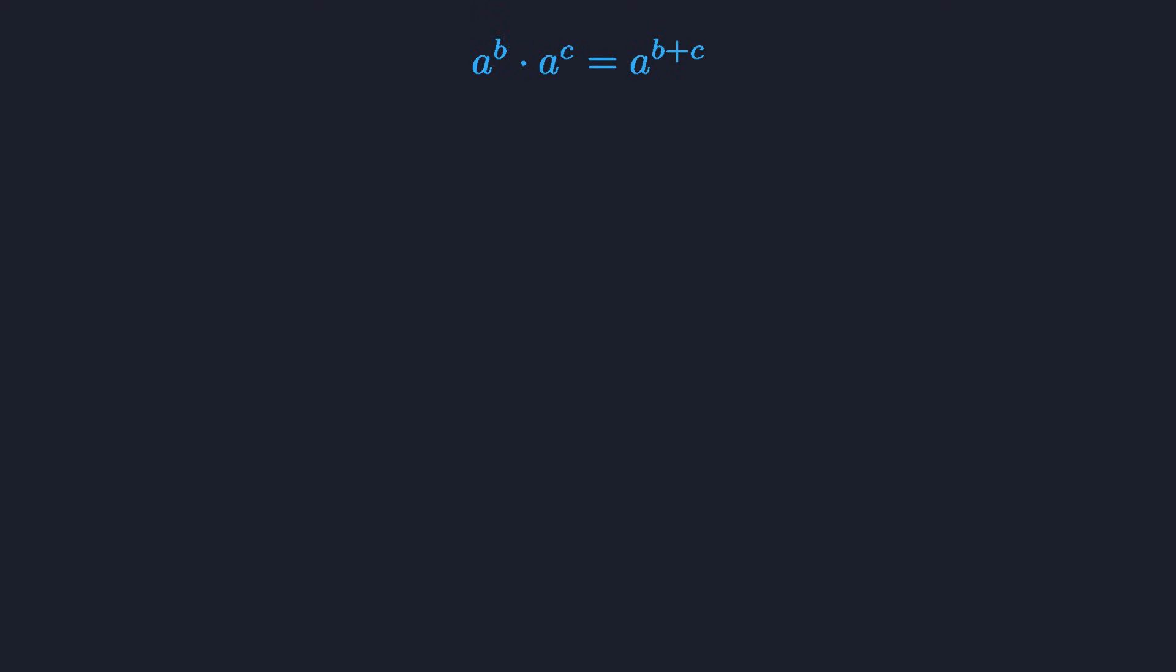a to the b times a to the c can be written more compactly as a to the b plus c. That's just basic algebra. But it also tells us something about types. The first expression is a product, so it counts pairs. The factors of the product are exponentials, so they count functions. So we're talking about pairs of functions here.